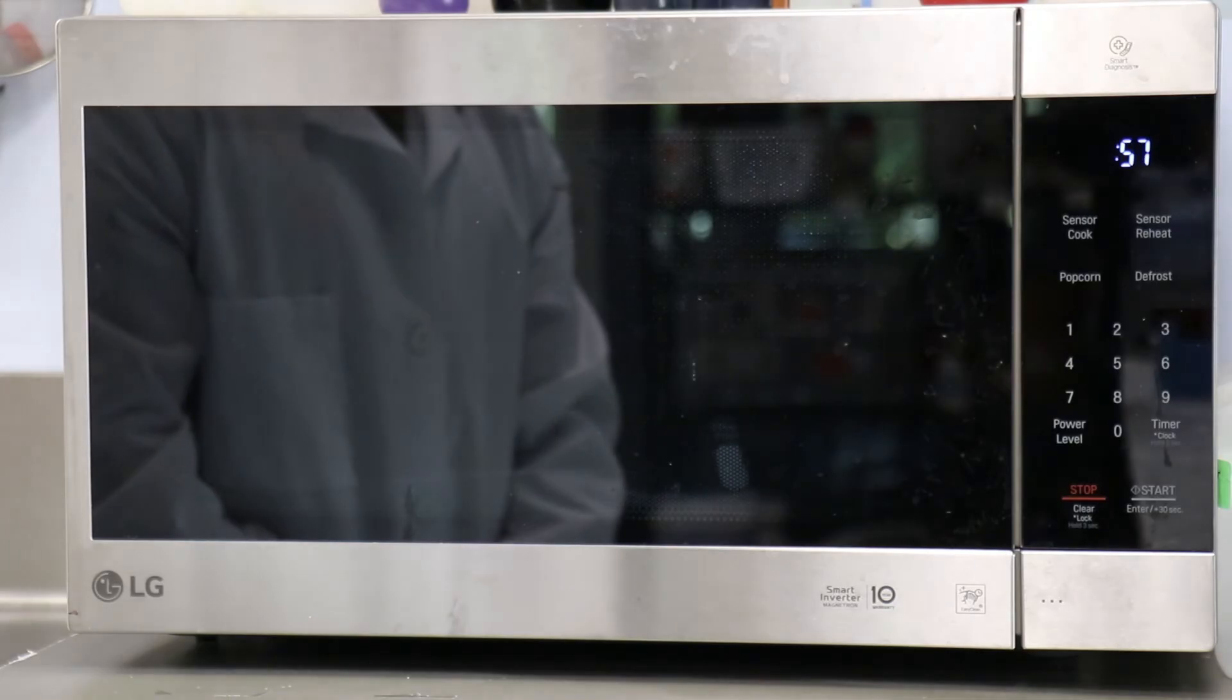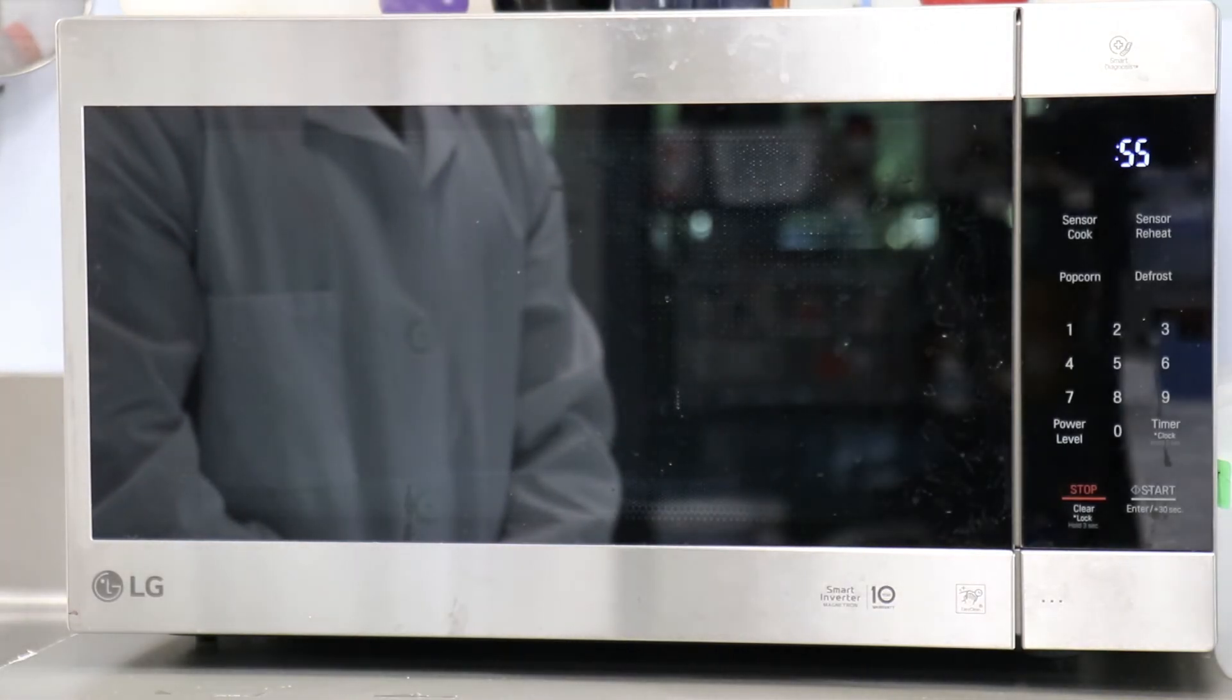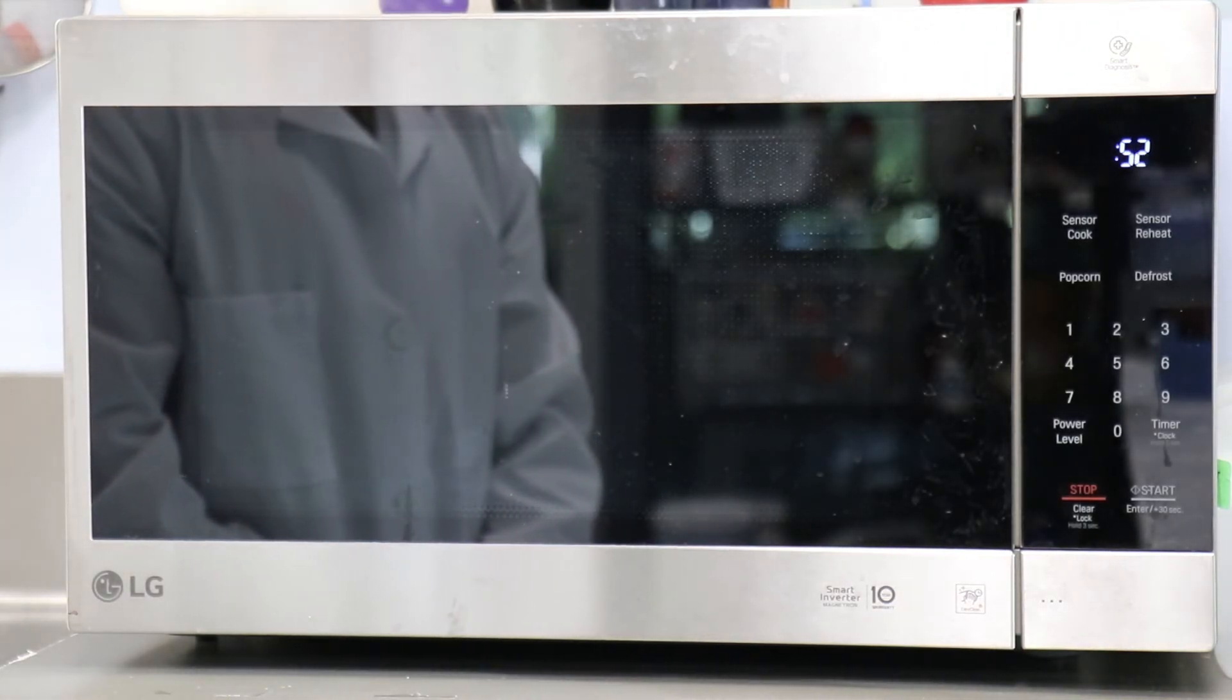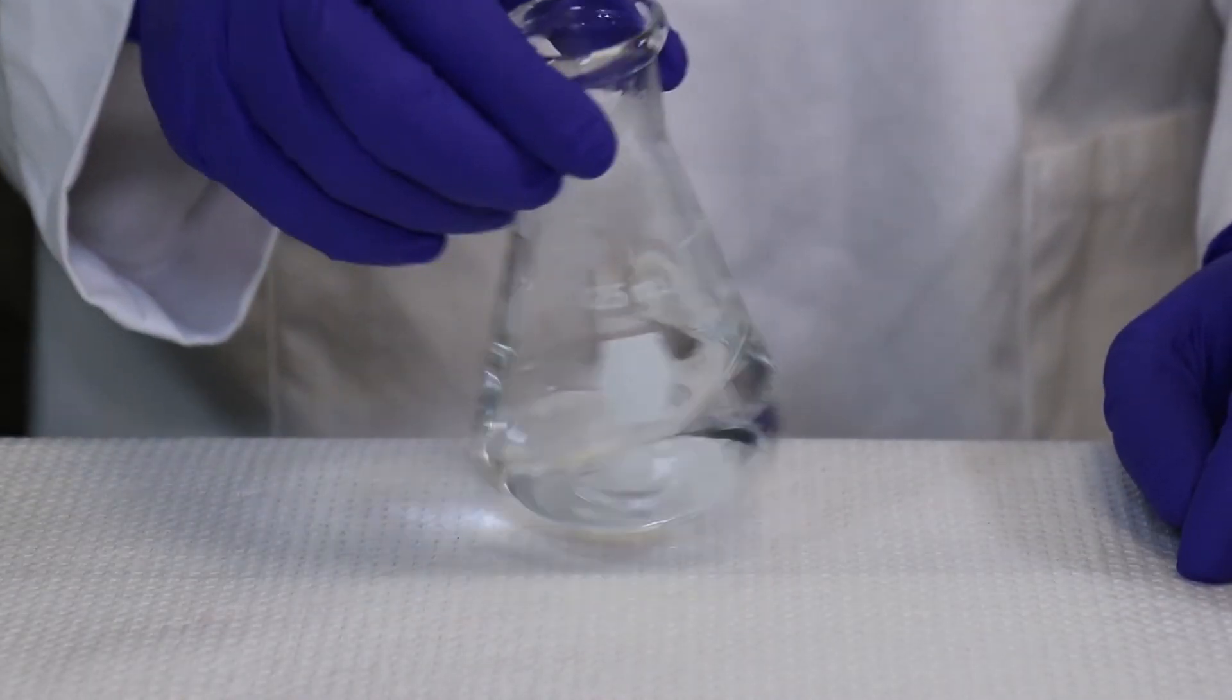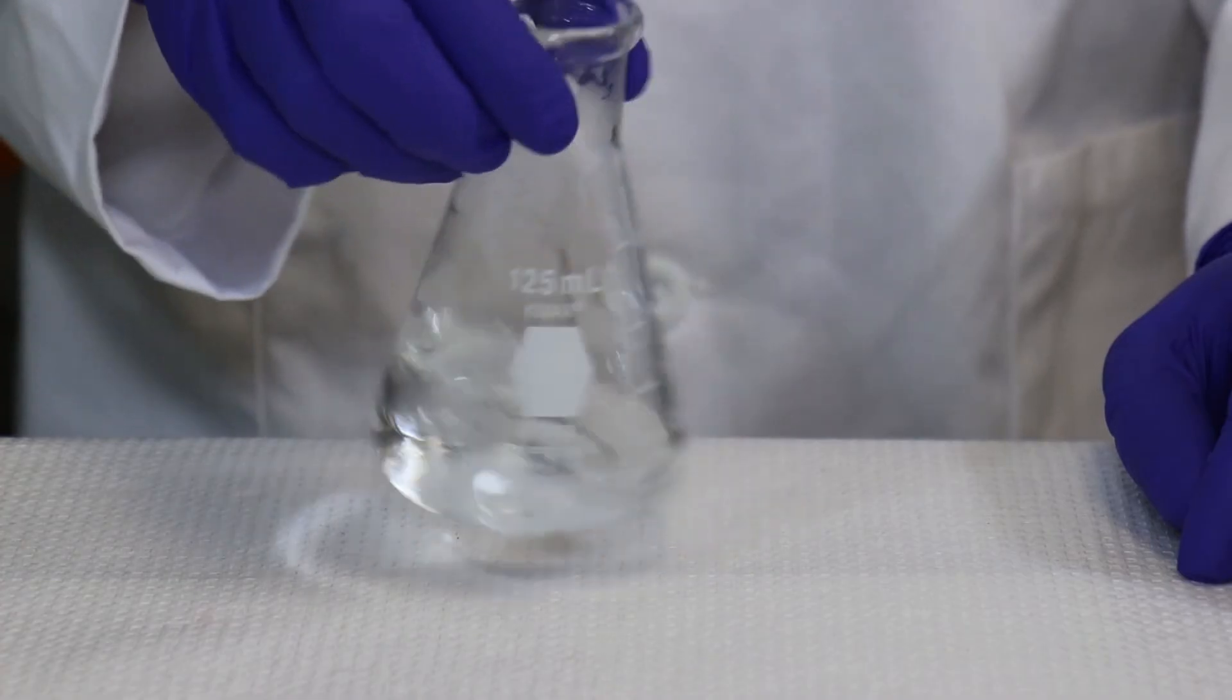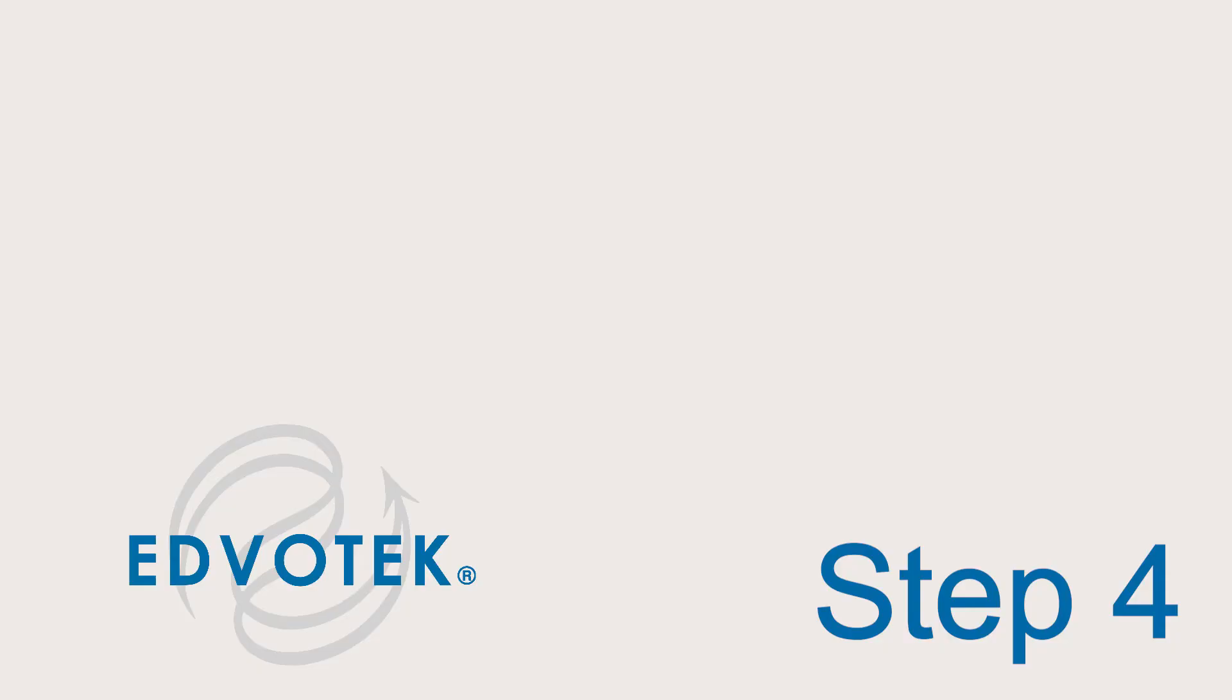Continue to heat the solution in 15 second bursts until the agarose is completely dissolved. The solution should be clear like water. Step 3: Cool the agarose to 60 degrees Celsius by carefully swirling the flask to promote even dissipation of heat.